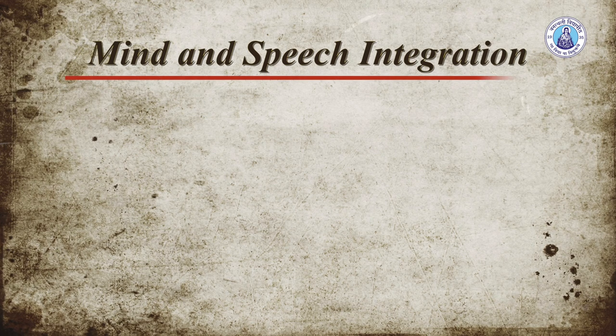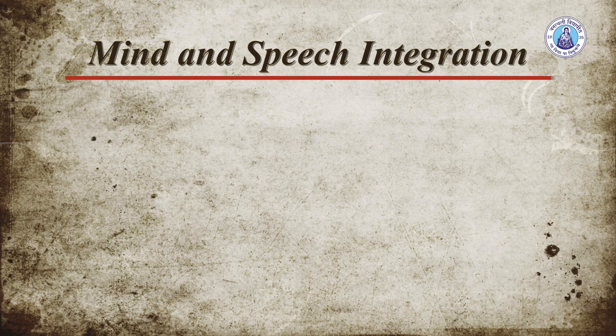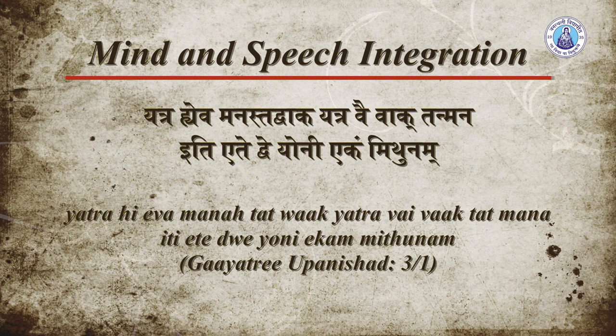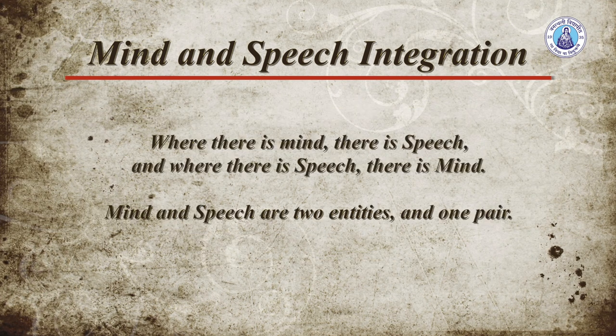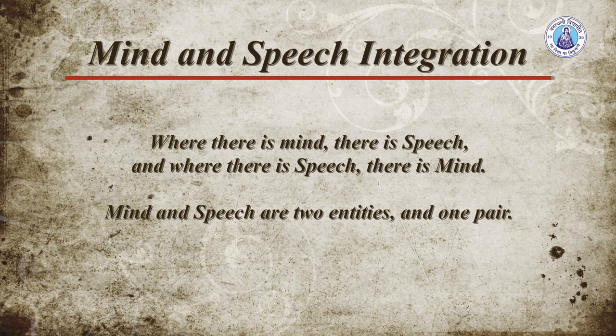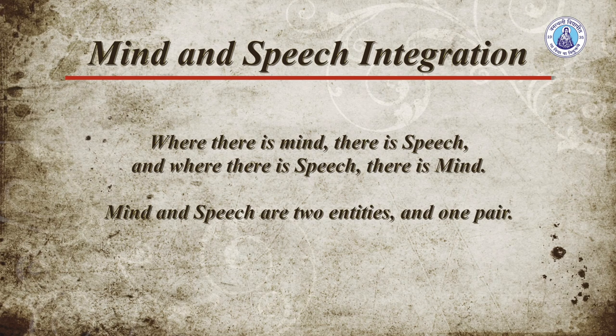Let us see one more sutra — from Gayatri Upanishad, third chapter, first sloka. It means: where there is mind, there is speech, and where there is speech, there is mind. Mind and speech are two entities and one pair. These two sutras indicate that mind and speech have to be in complete communion, complete harmony. Here I would like to place a discussion which may appear contradictory, but consider the hidden issues I am trying to raise.